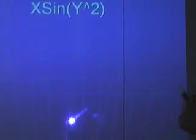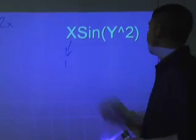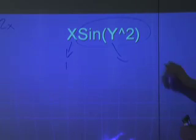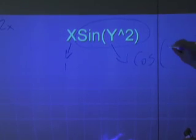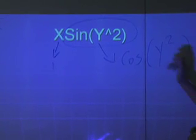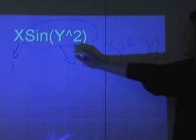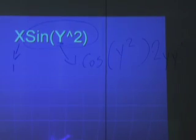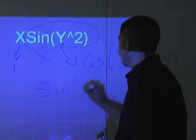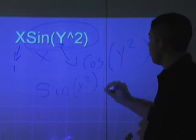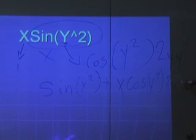Now for the second part, we follow the same steps. The derivative of x is simply 1. We apply the chain rule again: the derivative of sine is cosine — a common mistake is to skip the derivative of the inside — times the derivative of the inside, which is 2y. We also can't forget that y has a y prime. Applying the product rule gives us sine of y squared plus x cosine of y squared times 2y prime.